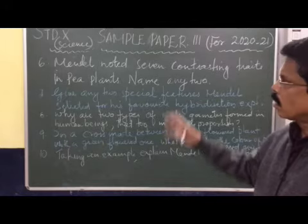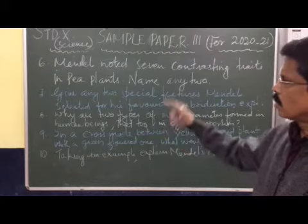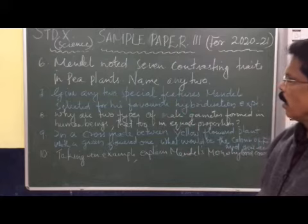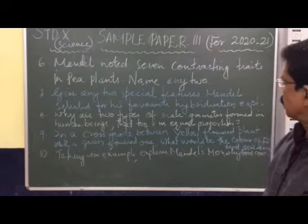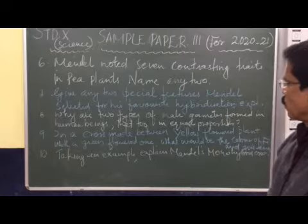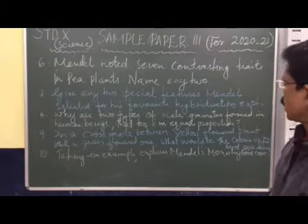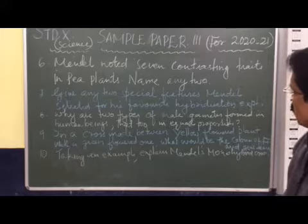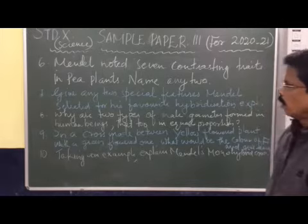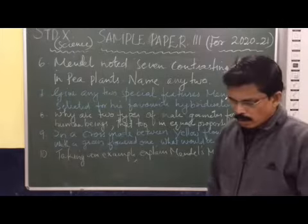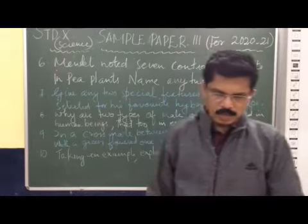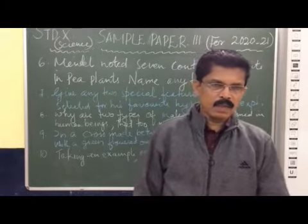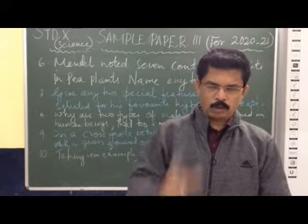Second question: Give any two special features Mendel selected for his hybridization experiment. Two special features Mendel observed in pea plants: the pea plants are easy to grow.